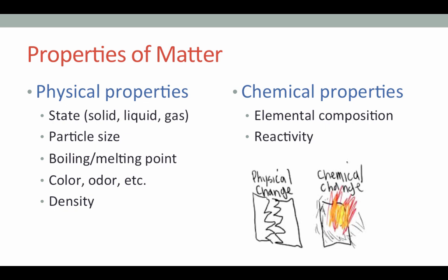When describing matter, we talk about physical properties and chemical properties. But what is meant by these terms? Well, physical properties mean what does this matter really look like? What is its state? Is it a solid, a liquid, or a gas? How large are the particles? What is its boiling point and melting point? When does it transition between the three states? What color is it? Does it have an odor? And also, how dense is it? How heavy is it?